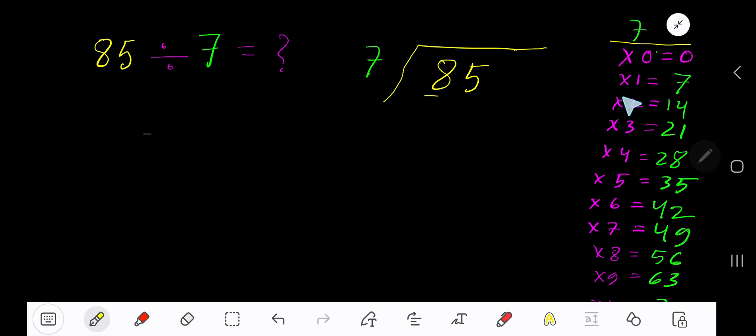7 goes into 8 how many times? 2 times 7 is 14, which is greater, so 1 time. 1 times 7 is 7. Subtract to get 1. Bring down the next digit. 7 goes into 15 how many times? 3 times 7 is 21, which is greater.